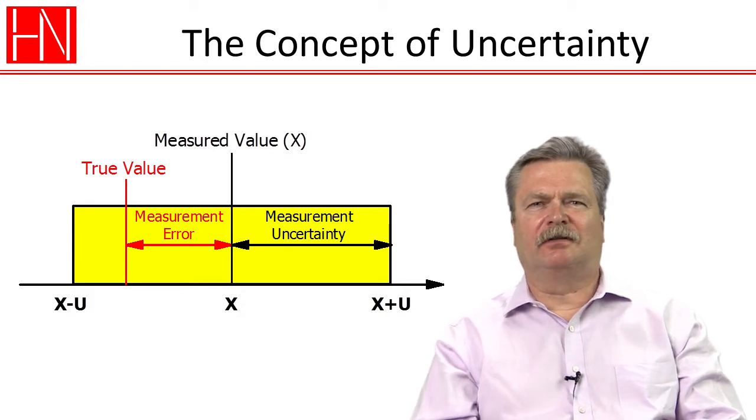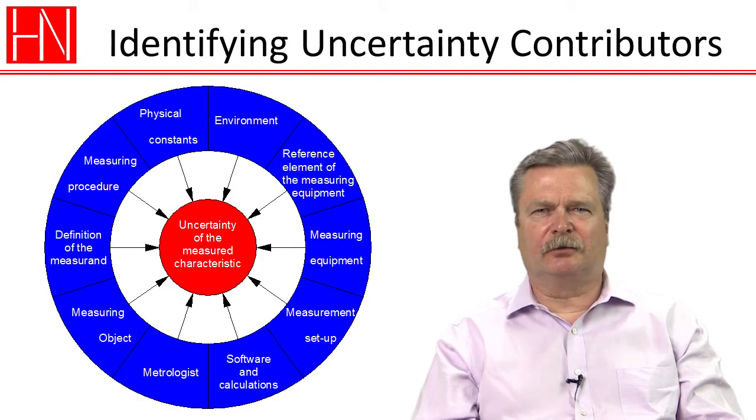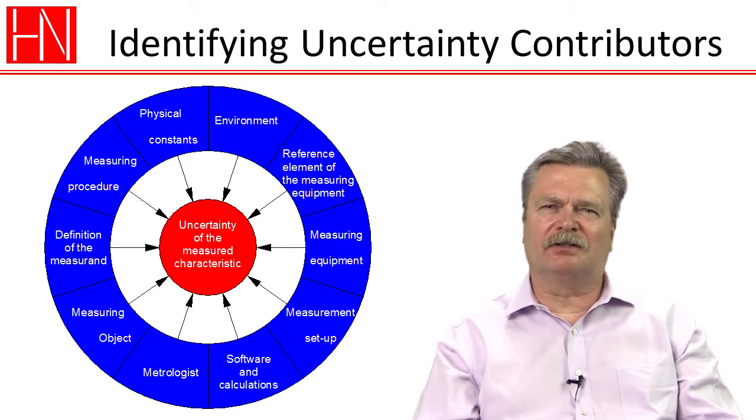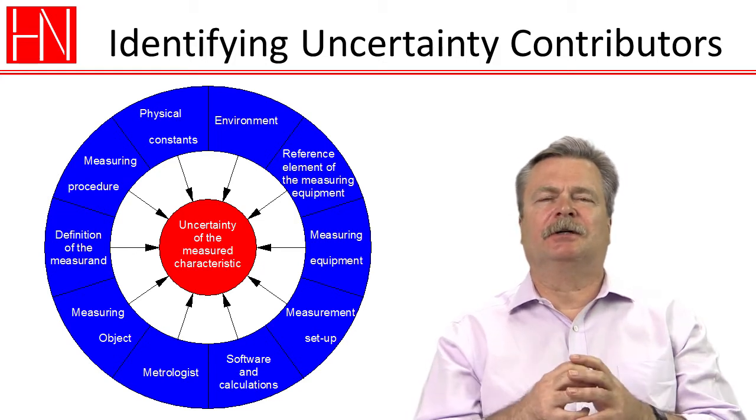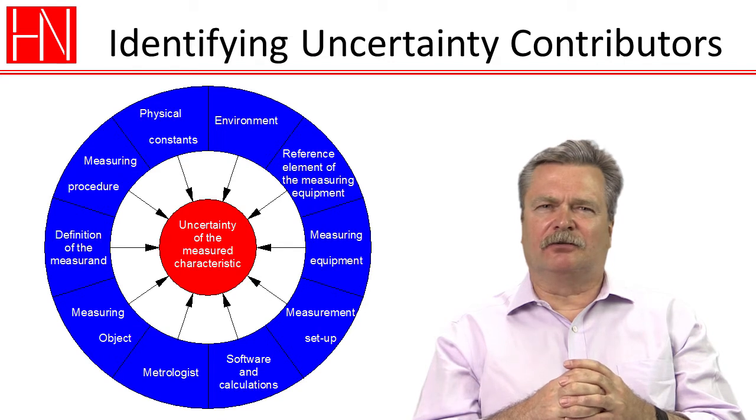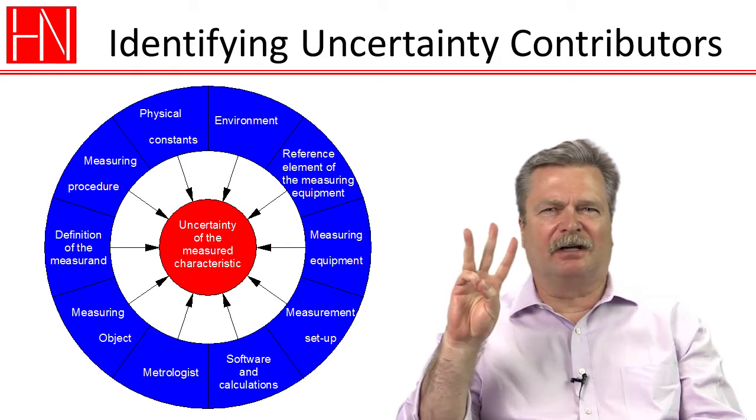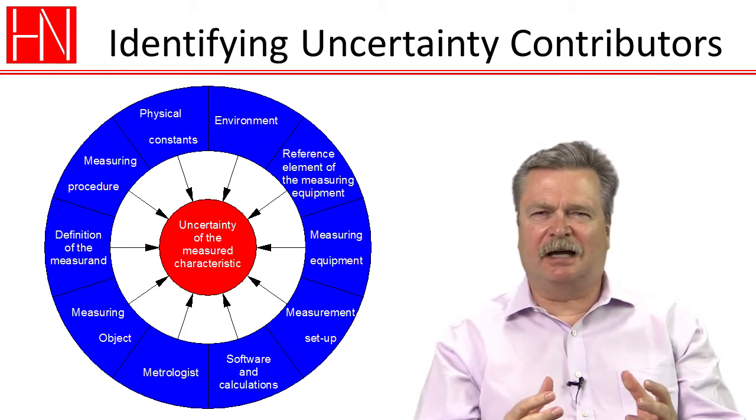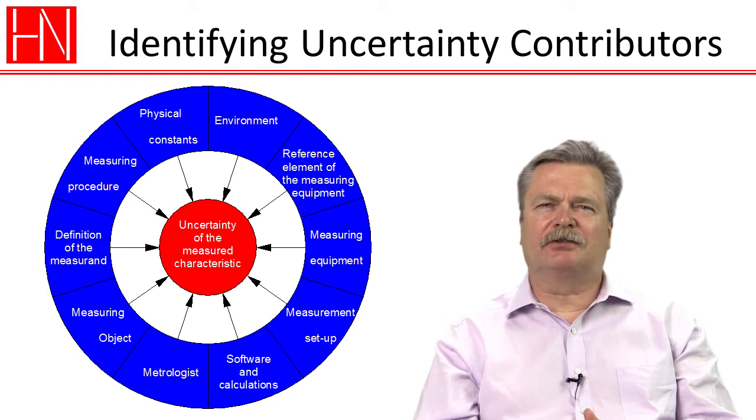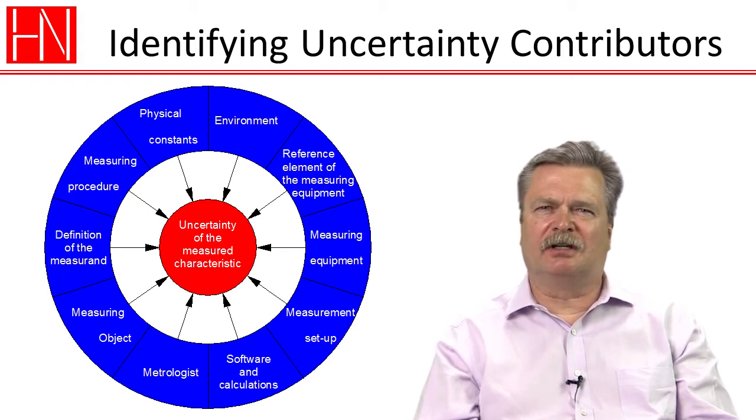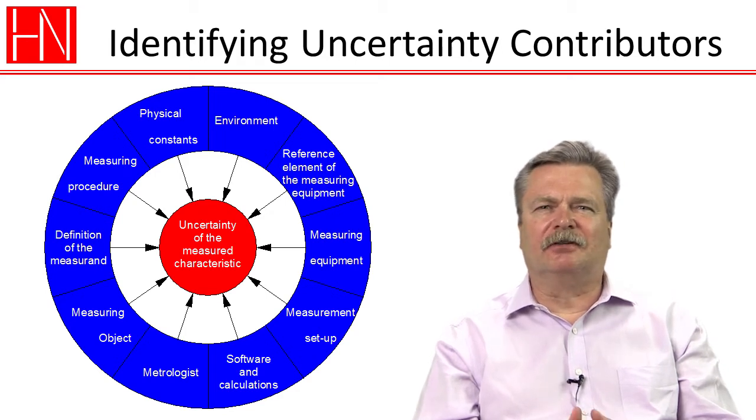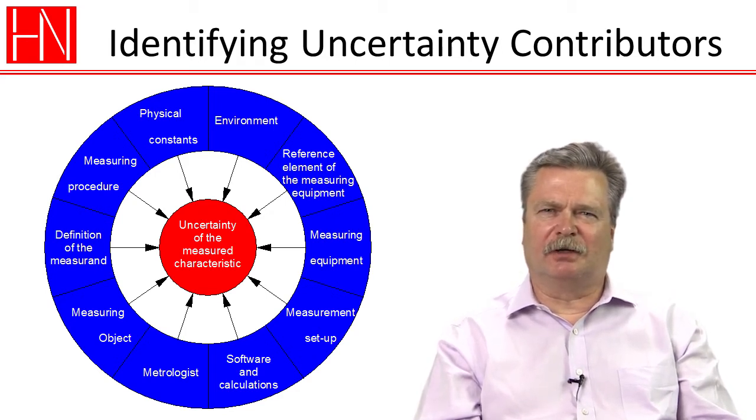And we started with a process for identifying uncertainty contributors and I emphasized how that, in a sense, is the most important part of the uncertainty estimation process. Because if we don't find the significant contributors, and as I kept telling you, as long as you can find the three major contributors, your budget is going to be as good as it can be. But if you cannot successfully identify the three largest contributors, then all bets are really off on whether the uncertainty that you calculate is anywhere in the vicinity of what the true uncertainty of your measuring process is.